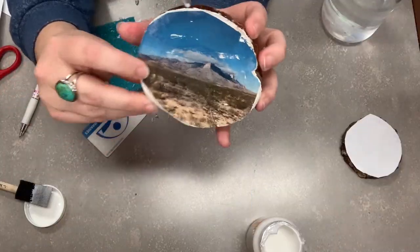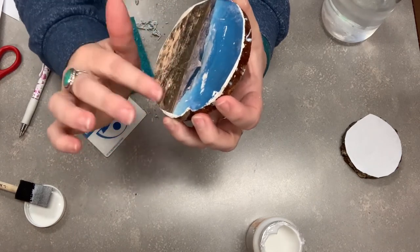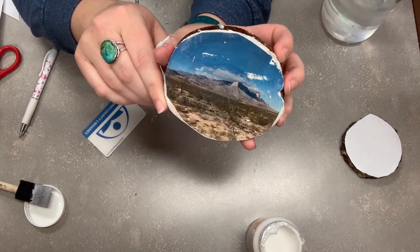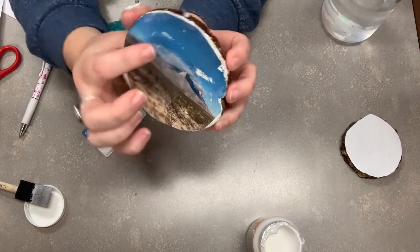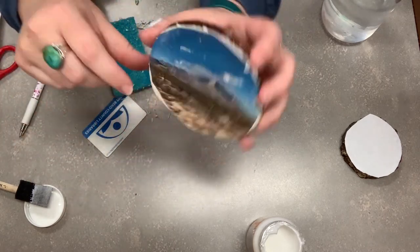So here it is with all the paper removed. You can see it did get scratched a little bit here and here. But doing image transfers does take practice, and there will probably always be some minor imperfections. But I love how these imperfections make the image transfer look rustic and vintage.